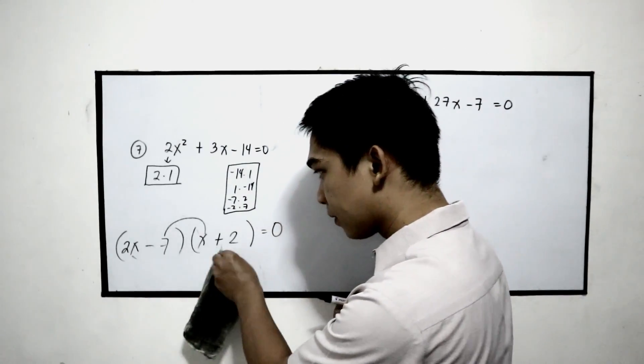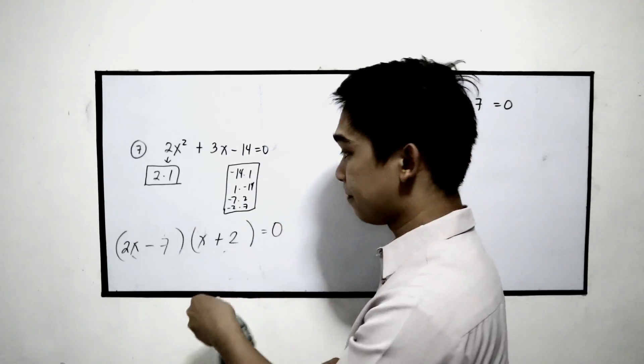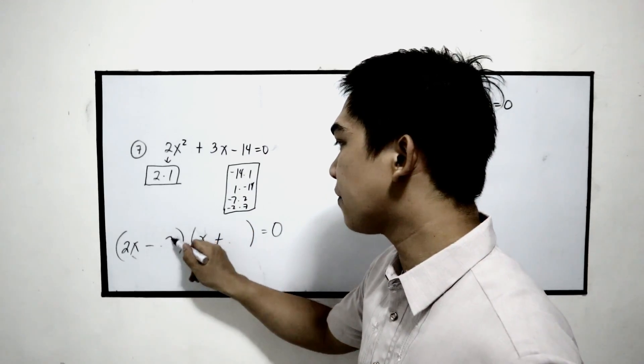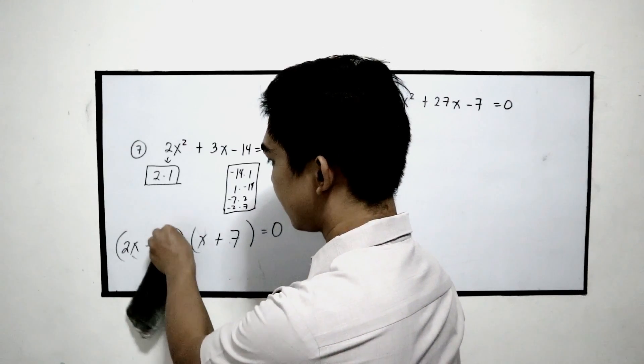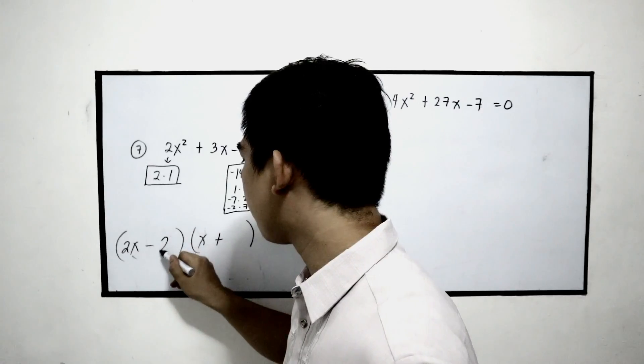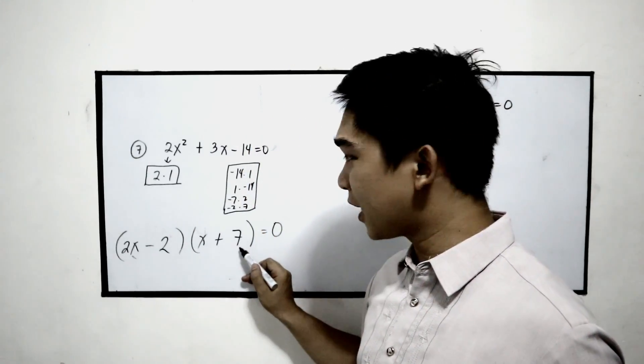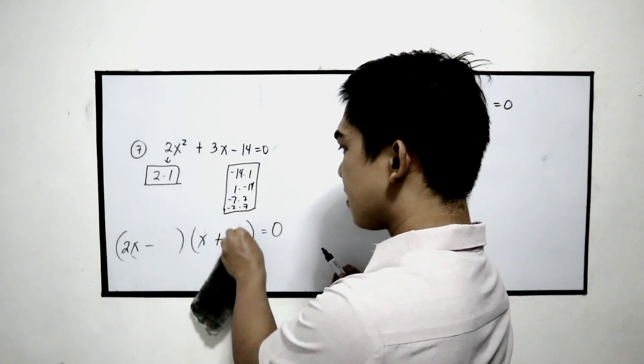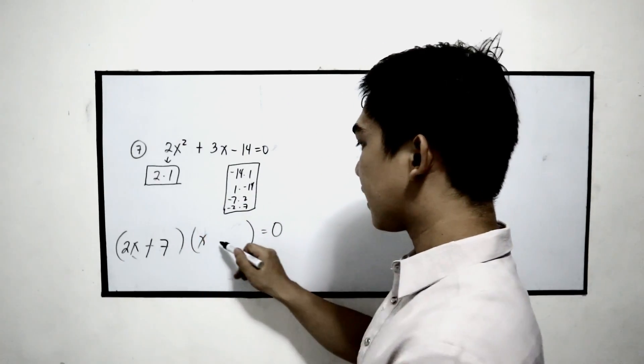Try another one. Let us try negative 2 and 7. Let us try positive 7 then negative 2.